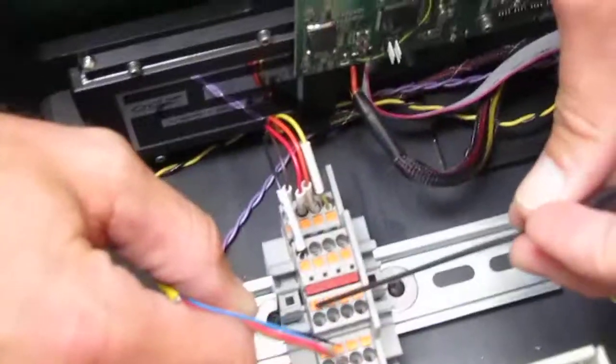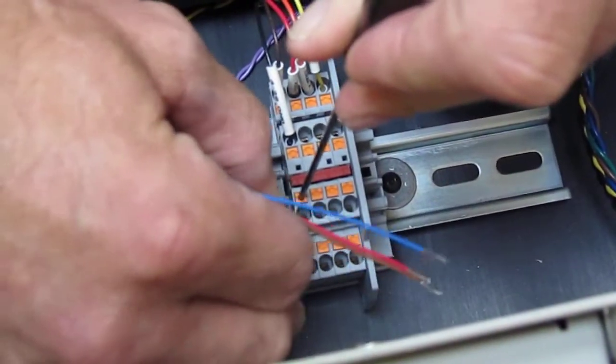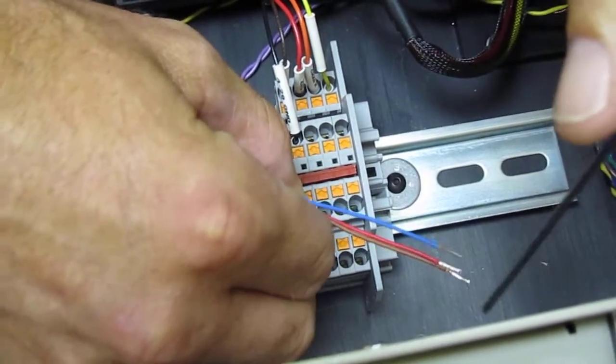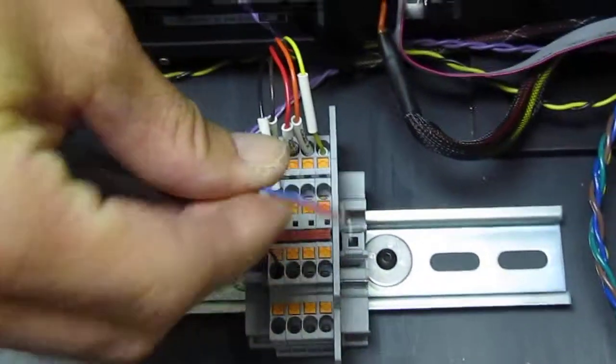To install cables, push down on the orange button, slide the wire into the terminal, release the orange button, and check for tight.